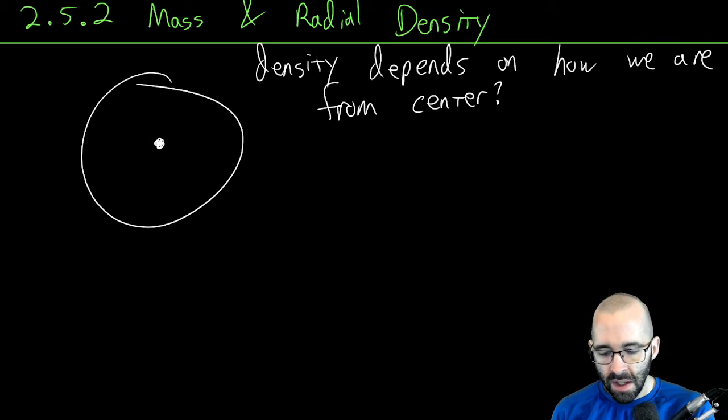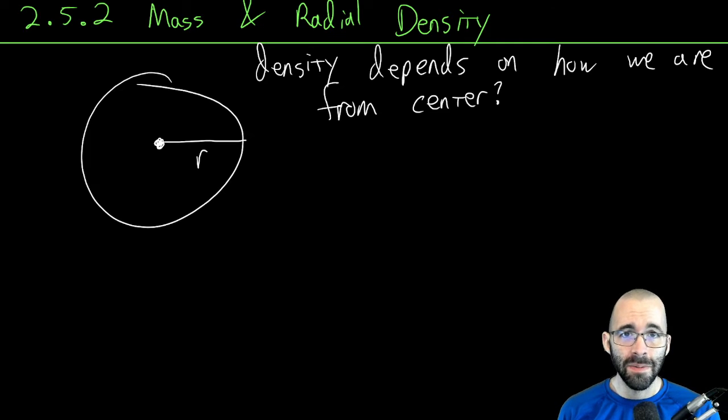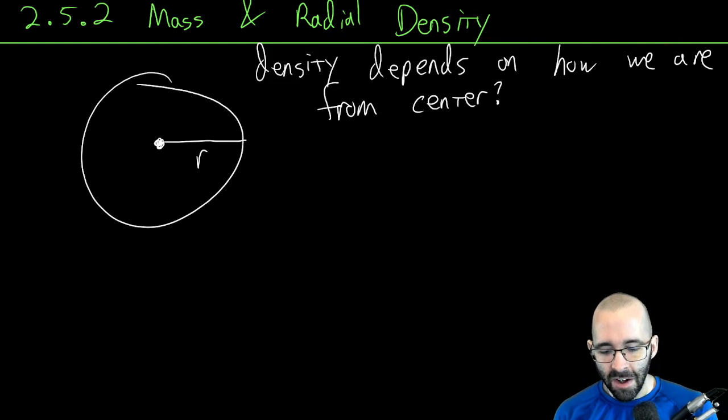Let's say this thing has radius r. Let's also say that this is a circle - please pretend that this is a circle. We're saying that the density depends on where we are.